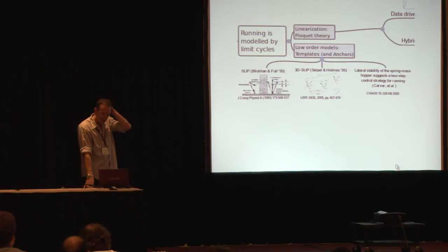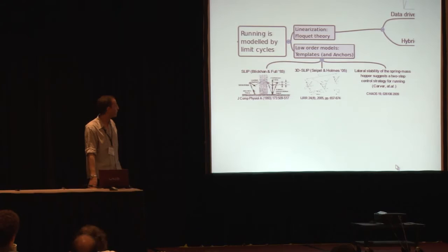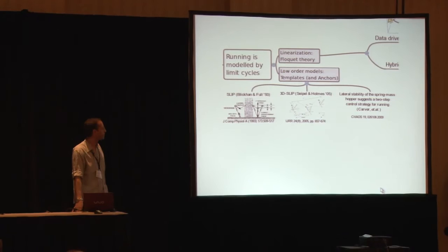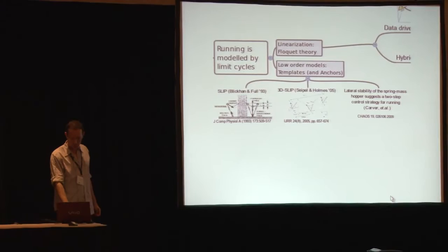In terms of lower-order models, this idea of templates and anchors, I'd like to mention three papers that relate. First, this is sort of basic work on SLIP as a template for running, for example, Blickhan's paper. I'll be talking about a model that's related to 3D SLIP, and that was first done by Justin, and then in particular about predictions that appear in Sean Carver's work with Noah Cowan and John Guckenheimer, and in Carver's thesis about lateral stability and deadbeat control in running.